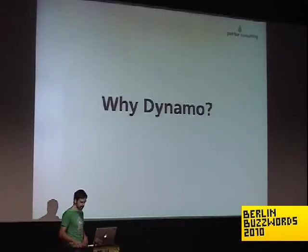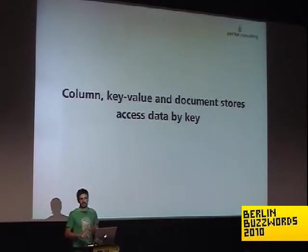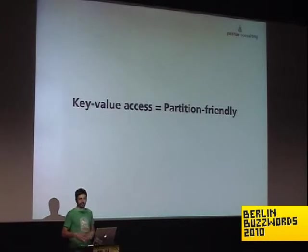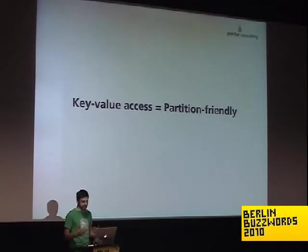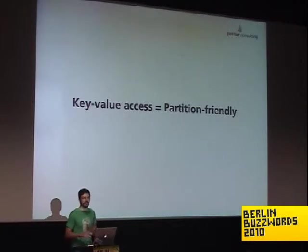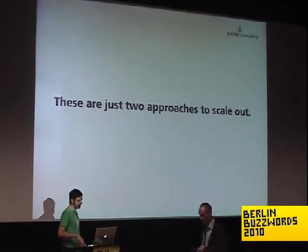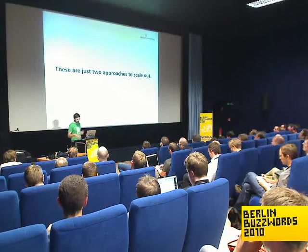Why pick Dynamo for your database? Because column stores, key-value stores, and document databases all access data by key. If you just need a key to access your data, everything becomes partitioning-friendly: you take that key, run a hash function on it, and find out which partition that key is in. That's why Dynamo has become really popular — you'll find it in a lot of tools. Cassandra and Riak are just the more popular examples. These are just two approaches to scaling out; the peer-to-peer one with CouchDB and Amazon's Dynamo model are just the ones you'll find a lot.